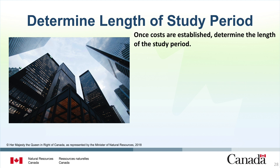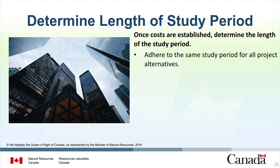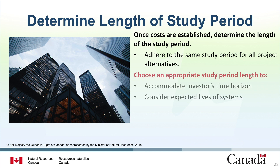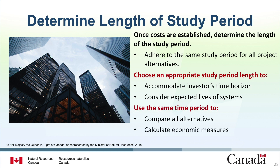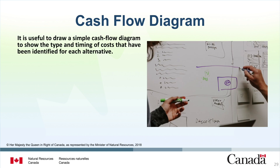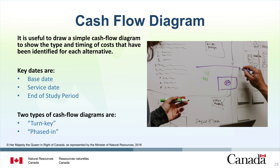Now that current and future costs associated with project alternatives are established, determine the length of the study period. It is important to adhere to the same study period for all project alternatives. The first consideration is to accommodate the investor's time horizon, which may be short — perhaps 5 to 10 years — or long, up to 40 plus years. The useful lives of the equipment and systems being installed are also a major consideration. The service period begins when the project commences or when occupants begin to use the facility. It is useful to draw a simple cash flow diagram to show the type and timing of costs identified for each alternative, with key dates indicating the base date, service date, and end of the study period.